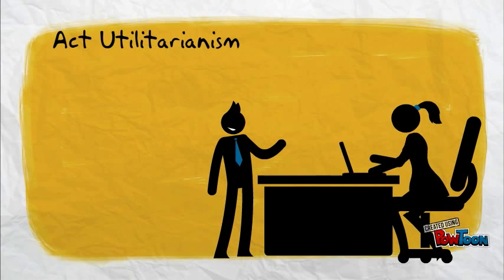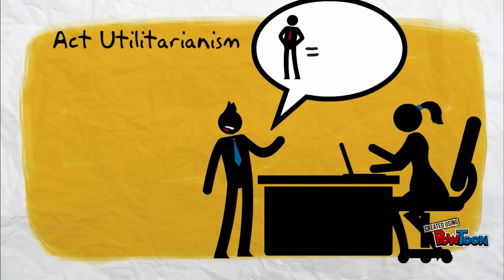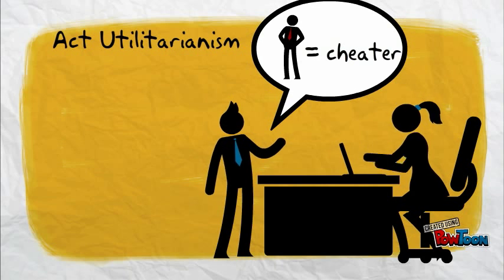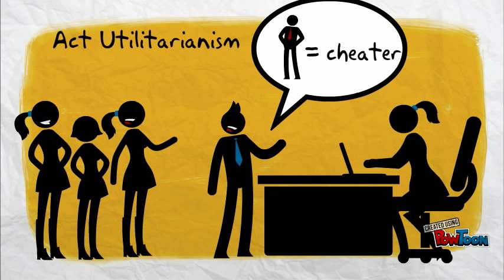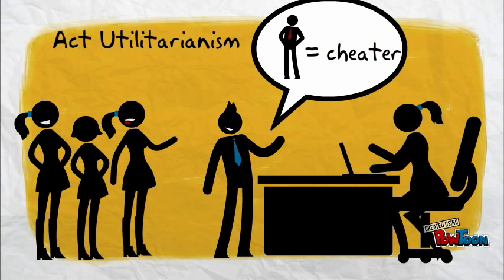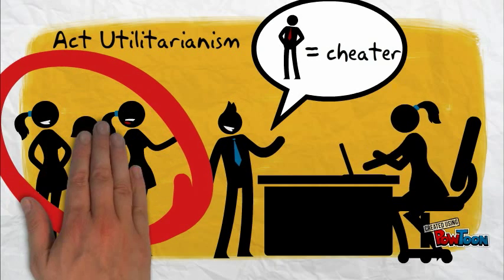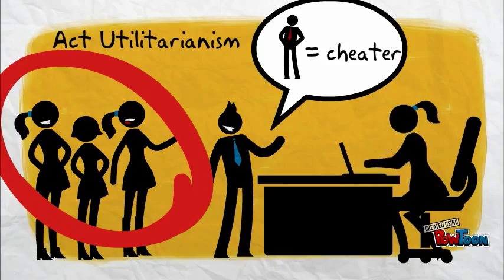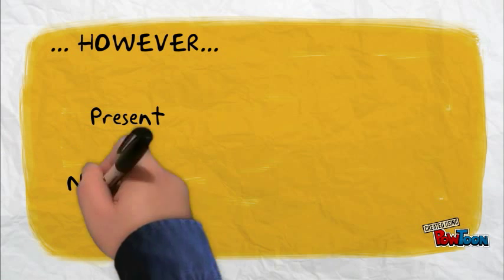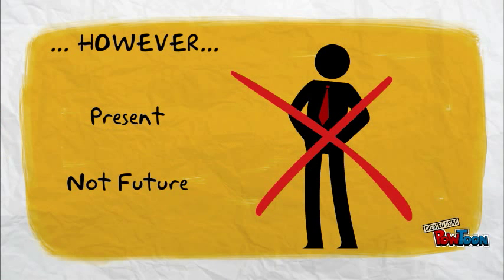According to act utilitarianism, you would go to the professor and tell her about his academic dishonesty. This way, you and the other three students will not fail the assignment, and therefore will be doing the greatest good for the greater number of people. However, this decision takes into consideration the present without considering that he might fail the course due to plagiarism.